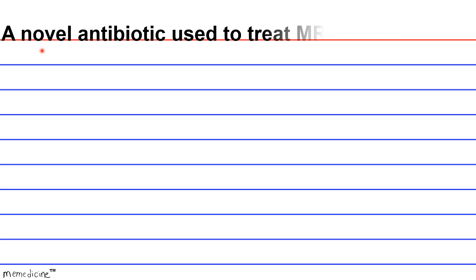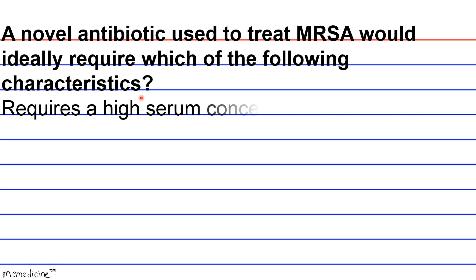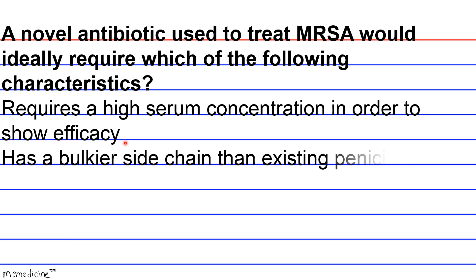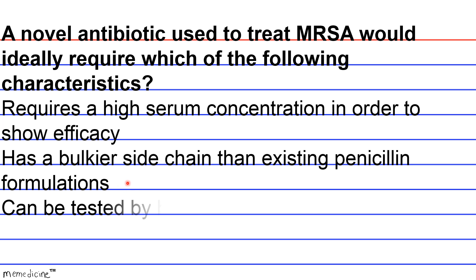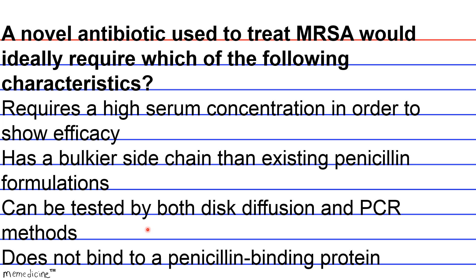Question 5: A novel antibiotic used to treat MRSA would ideally require which of the following characteristics? A. Requires a high serum concentration in order to show efficacy. B. Has a bulkier side chain than existing penicillin formulations. C. Can be tested by both disc diffusion and PCR methods. Or D. Does not bind to a penicillin binding protein.